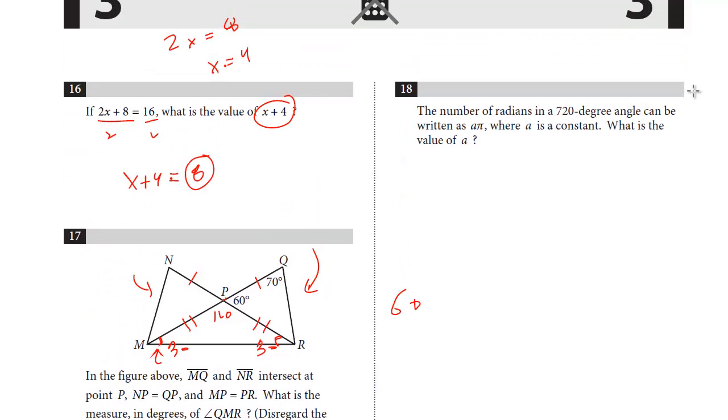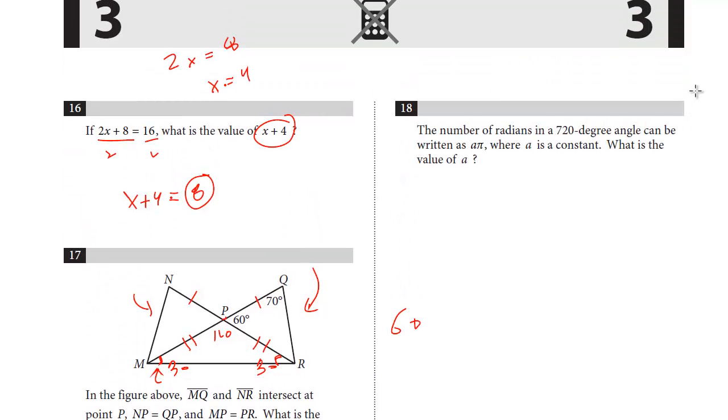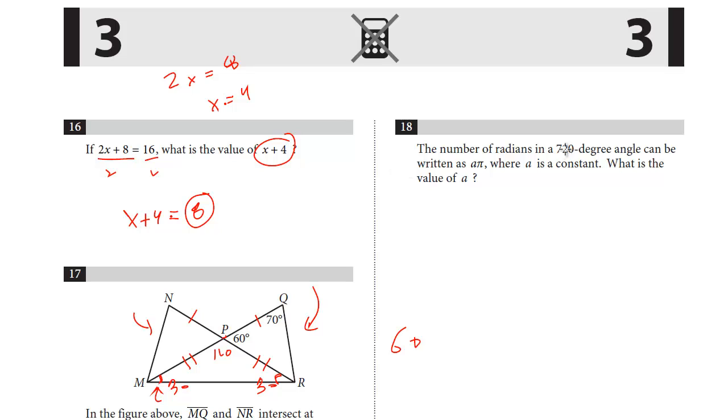Let's take a look at the last question on this page, number 18. The number of radians in a 720 degree angle can be written as π times a, where a is a constant. What's the value of a?